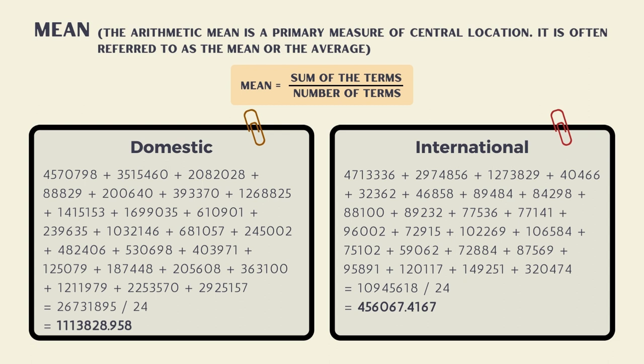For domestic, the total sum of the terms is 26,731,895 divided by the total number of terms, which is 24. So the mean is 1,113,828.958. For international, the total sum of the terms is 10,945,618 divided by the total number of terms, which is 24. So the mean is 456,067.4167.